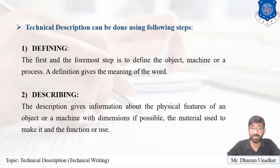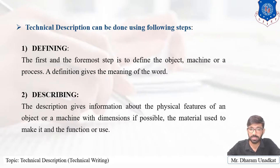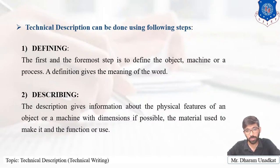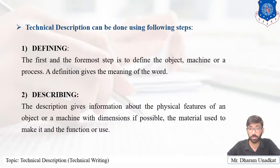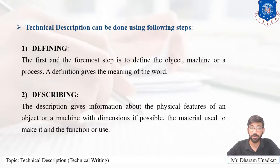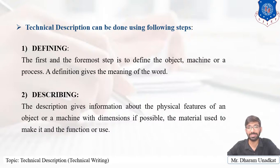This is all about technical description — from the word itself, it is not a small writing but around 7 to 10 pages, generally the manual we get when we purchase a product. Today we have covered two topics: technical proposal, which is used when you have to start anything or convince your superiors, and technical description, which is the booklet we get when we buy a product. More topics of the technical writing module will be discussed in upcoming videos. Thank you.